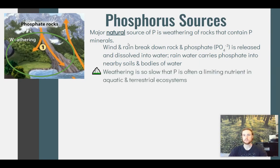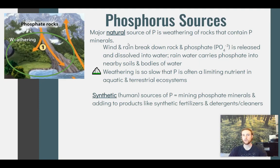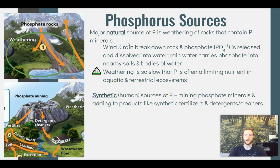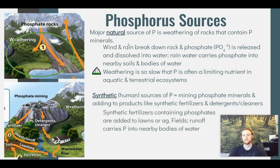It's important to remember that this process is very slow, and because of that, phosphorus is a limiting nutrient in many ecosystems, meaning plant growth is dependent on how much phosphorus is available. In terms of synthetic or human-made sources of phosphorus, humans mine phosphate-containing rocks out of the ground and add phosphates to synthetic fertilizers or other products like detergents and cleaners. We dig up rocks containing phosphorus, extract the phosphorus, and add phosphates to those products.